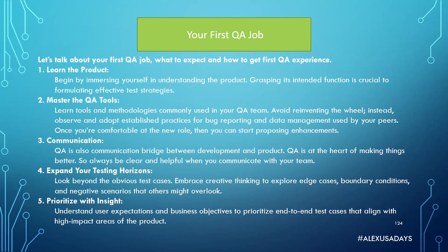And number five: prioritize with insight. Understand user expectations and business objectives to prioritize end-to-end test cases that align with high-impact areas of the product. Those will be the crucial areas you want to address first.